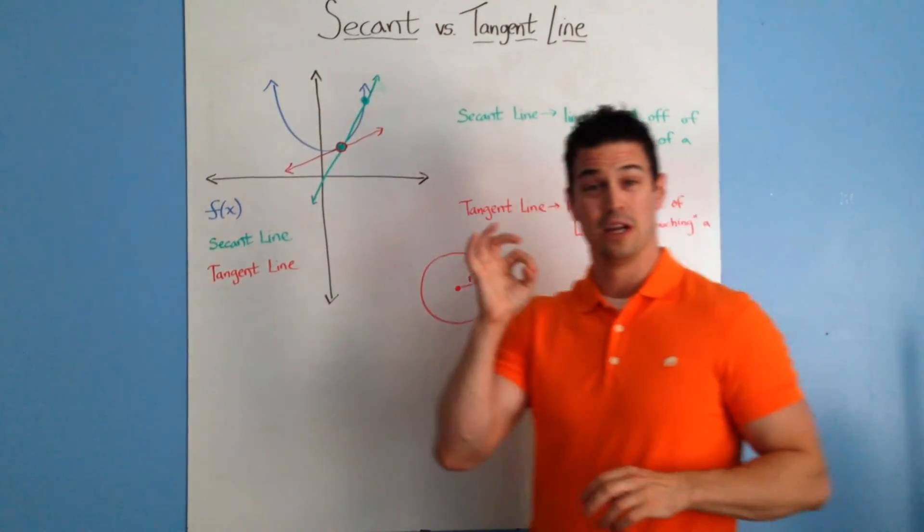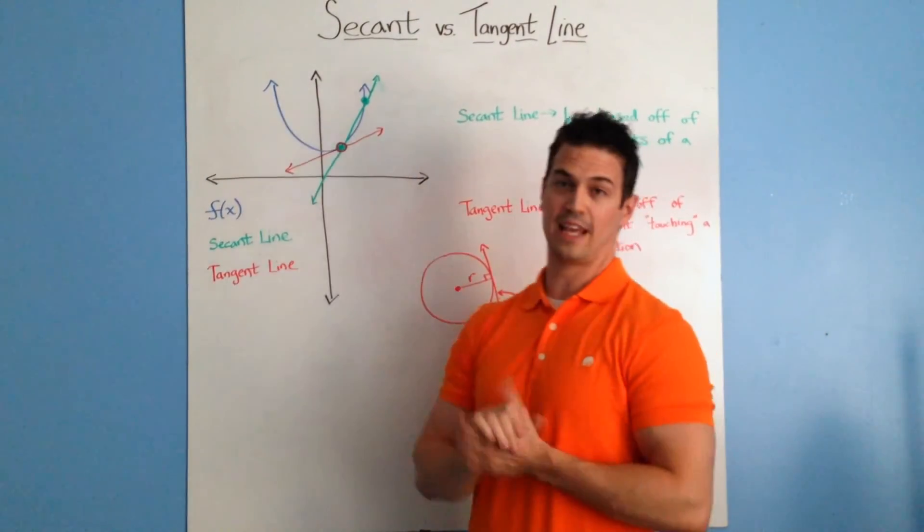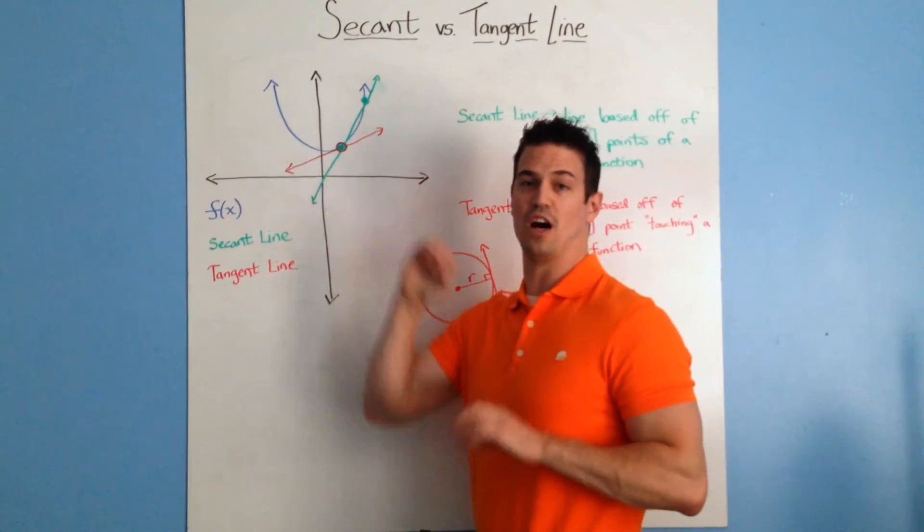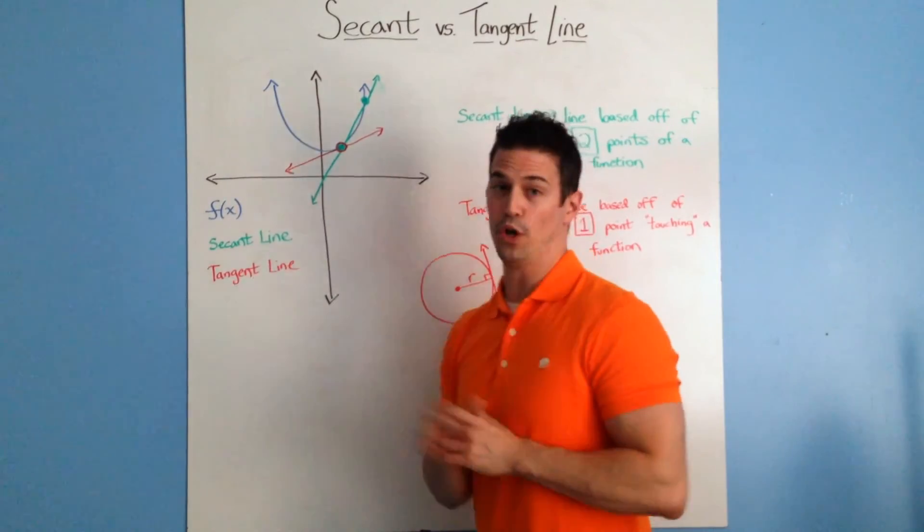The tangent line, however, is a little harder because you only have one point. In the next video, I'll describe how to actually find the equation of a tangent line based on one point.